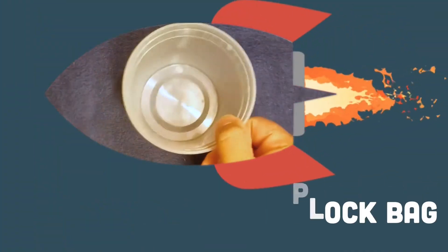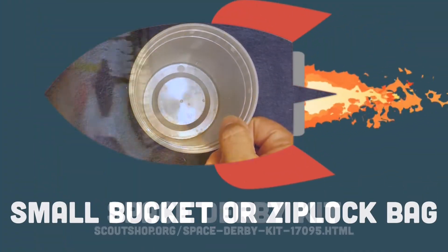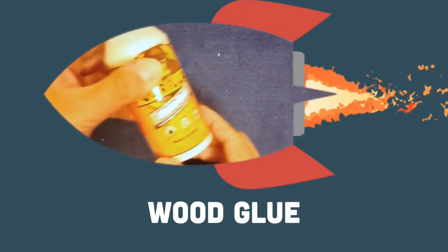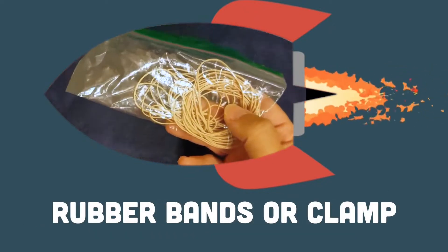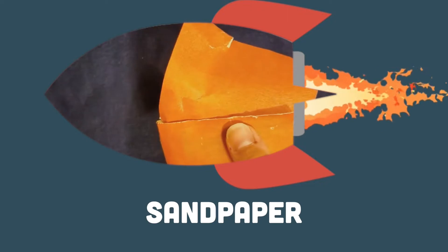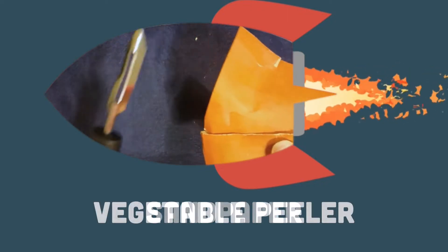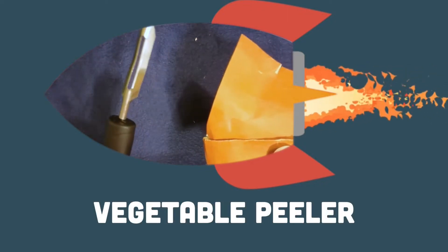First thing we need is a small bucket or ziploc bag. We need our space derby kit, wood glue and rubber bands or a nice big clamp. We want to make sure we have plenty of sandpaper and we can even use a vegetable peeler to help shape our rocket.